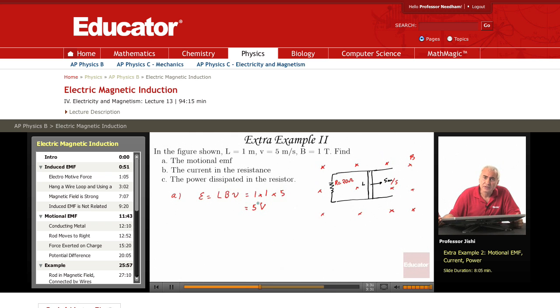What's the current in the resistor? Now we have seen in our analysis of this situation that the positive charge moves up and the negative charge moves down.